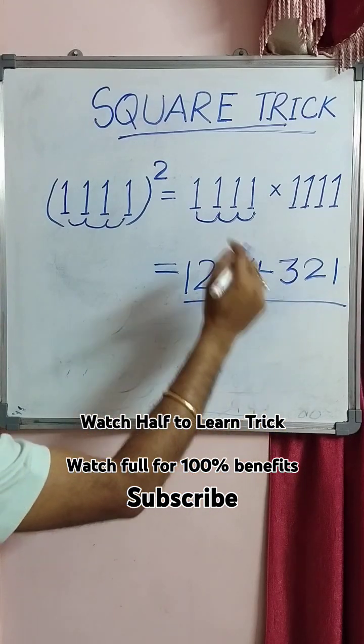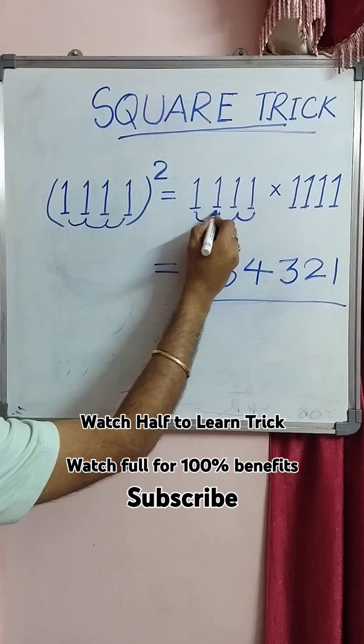Now how many digits will be in the answer? Just see here how many digits are there: one, two, three, four.